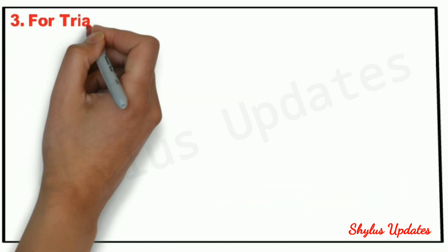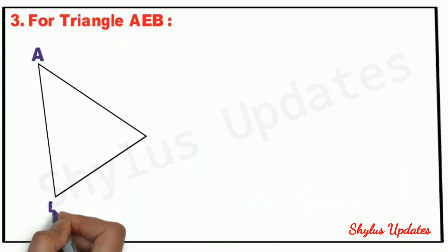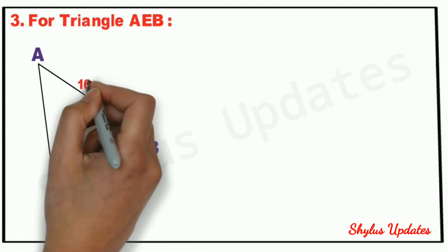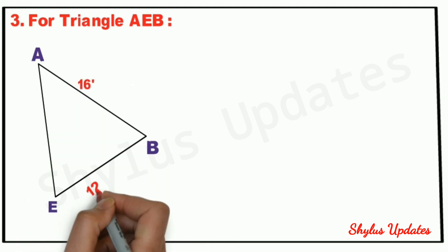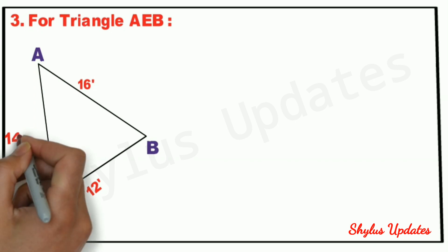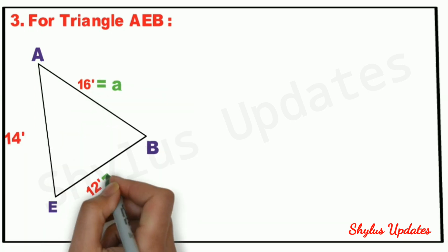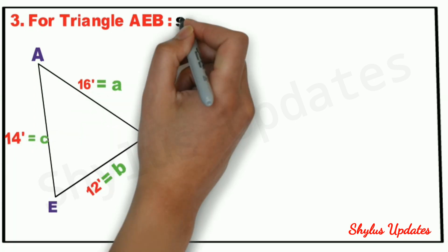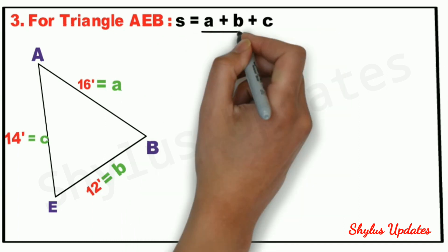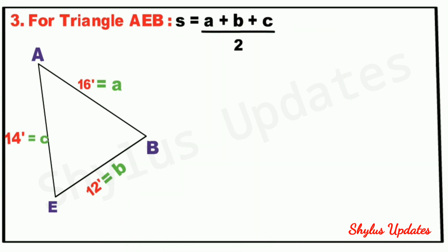Next, for triangle AEB: AB equals 16 feet, BE is 12 feet, and AE is 14 feet. Here also, we calculate s. S equals a plus b plus c upon 2. When we substitute the values, we get 21 feet.